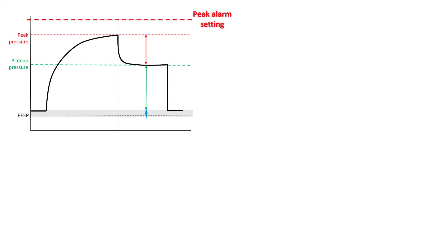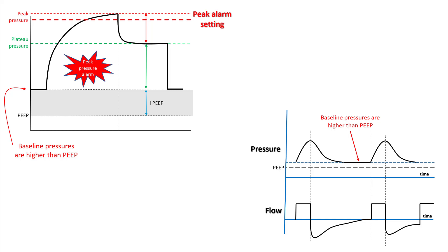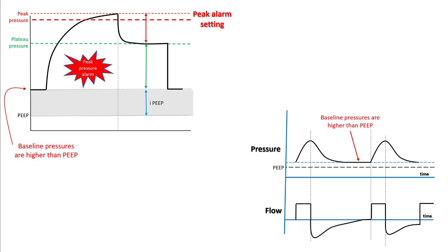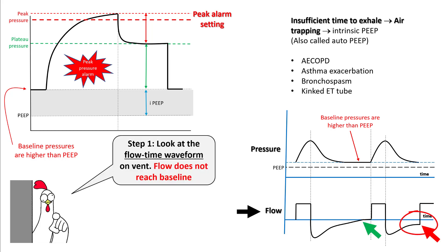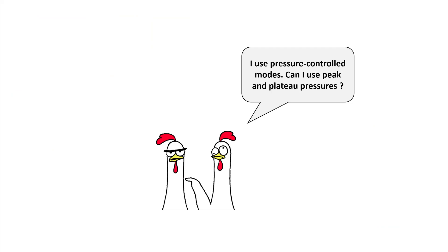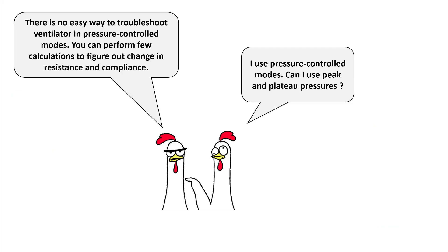Suspect auto-PEEP if there is already a problem with the resistance component. To detect it, observe the pressure-time and flow-time loops. If baseline pressures are higher than the set PEEP, you may be dealing with auto-PEEP. Look at the flow waveform — if flows are not returning to baseline, there is insufficient time to exhale, resulting in air trapping and increased lung pressure. This is seen in obstructive diseases. Perform an expiratory pause to measure the magnitude of intrinsic PEEP.